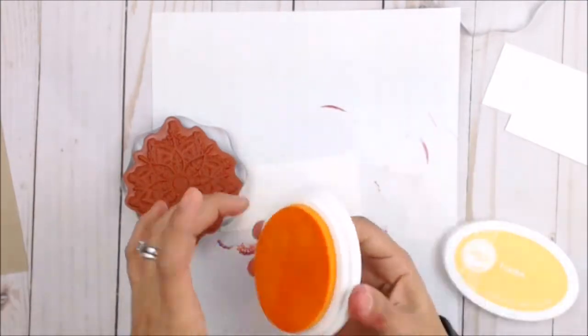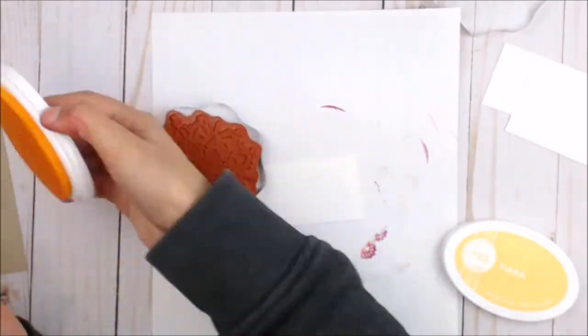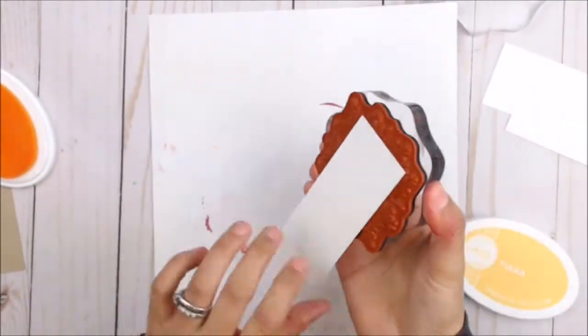I'm going to begin with the lightest color on the edge of my white cardstock. I'm going to stamp it using the tiara.